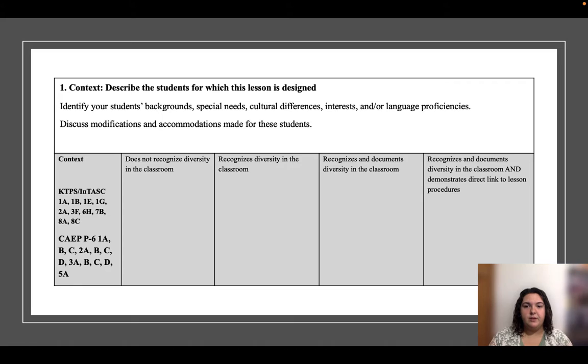Box one: this is where you're really going to start getting into the meat of your lesson plan. This is where you discuss your students' backgrounds. As you can see, it says identify your students' backgrounds, special needs, cultural differences, interests, and/or language proficiencies. Your background is like your IEPs, 504 plans which has to do with physical disabilities such as being deaf or blind, your race, your socioeconomic status, any language differences, and any interests for the students.